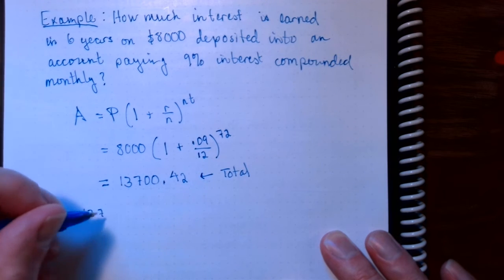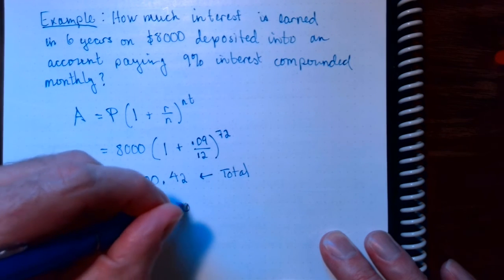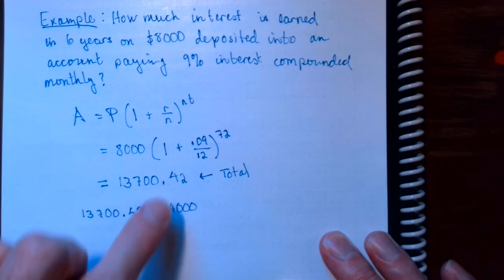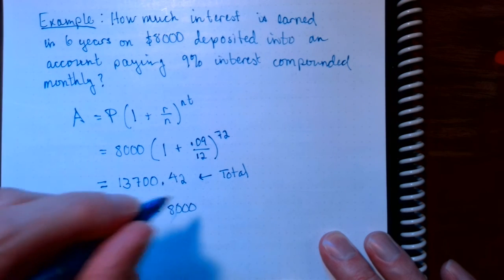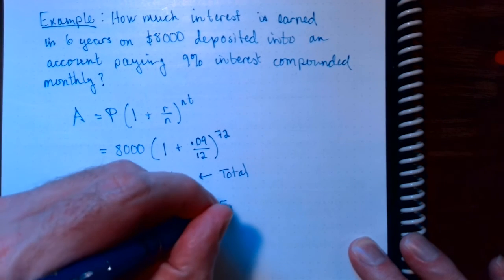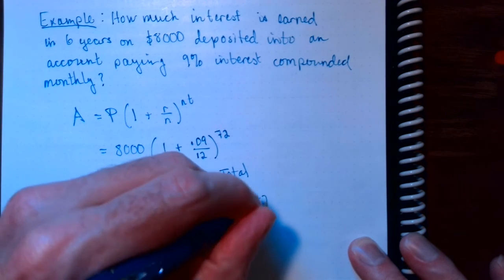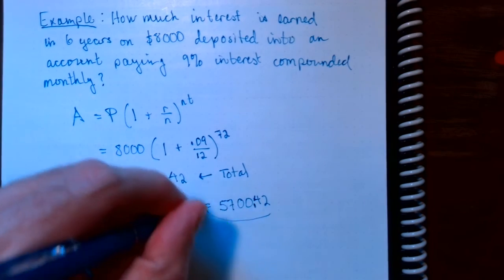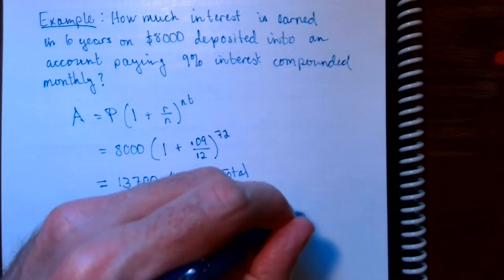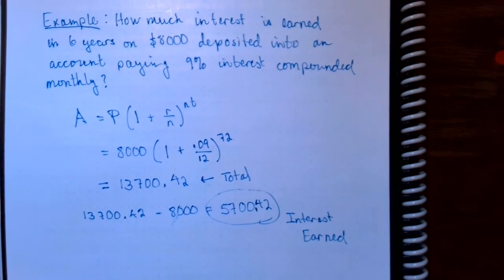Now if I take that amount and subtract the initial principal of $8,000, that will tell me the amount of interest that I've earned. And we do that computation and we get $5,700.42. So this is the interest earned.